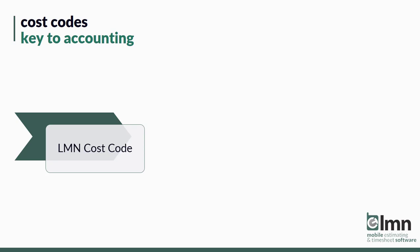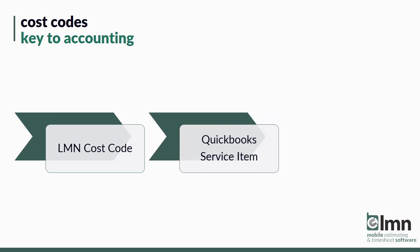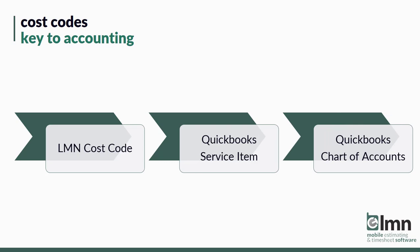In LMN, as you're estimating you have to pick the cost code you want to use for that part of the estimate. What that does is when you export to QuickBooks it links the revenue for that piece of the estimate to a QuickBooks service item. You can call the QuickBooks service item anything you want, but generally it's a very similar name to the cost code. And in QuickBooks each service item is tied to a QuickBooks chart of account. So ultimately the cost codes in LMN are a way of getting revenue and expenses into the correct QuickBooks chart of account.